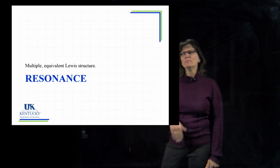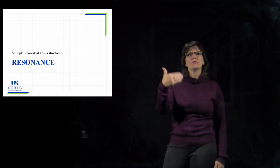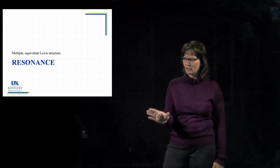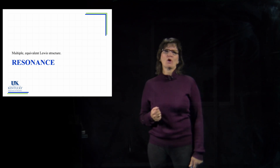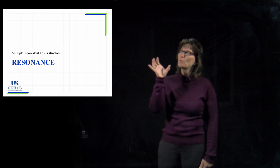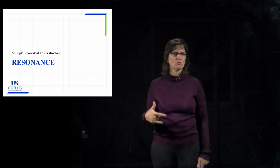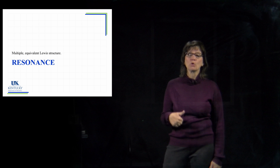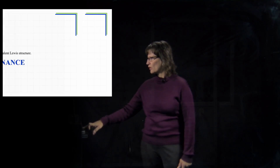Our next topic is resonance. Sometimes when we can draw multiple Lewis structures, they're not equivalent — when we bookkeep those electrons by doing formal charges, we see that some Lewis structures are better than others. But sometimes when we draw more than one Lewis structure, they all have equivalent formal charges, and we call them equivalent Lewis structures. When we have equivalent Lewis structures, they're called resonance structures.